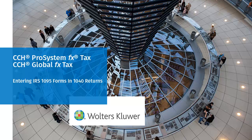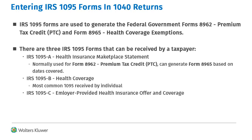Welcome to the video on entering IRS 1095 forms and 1040 returns for CCH Pro System FX Tax and CCH Global FX Tax. IRS 1095 forms are issued by employers for health insurance and can generate Form 8962 for the Premium Tax Credit and Form 8965. In this video we'll go through the inputs for the different 1095 forms.